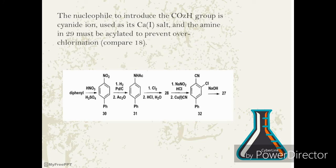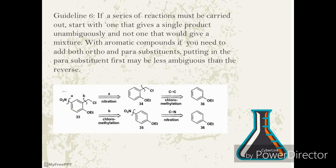The nucleophile to introduce the CO2H group is cyanide ion, used as its copper salt, and the amine in 29 must be acylated to prevent over-chlorination, guideline 6. If a series of reactions must be carried out, start with one that gives a single product unambiguously and not one that would give a mixture. With aromatic compounds, if you need to add both ortho and para substituents, putting in the para substituent first may be less ambiguous than the reverse.